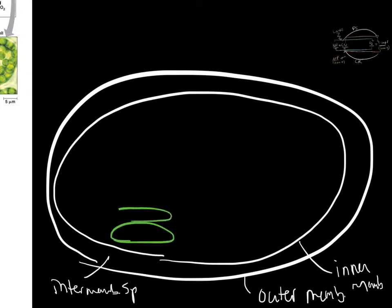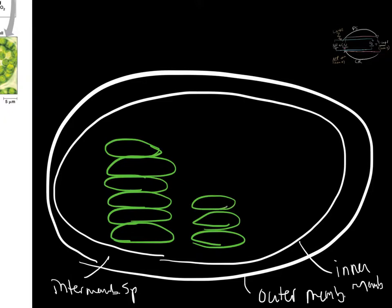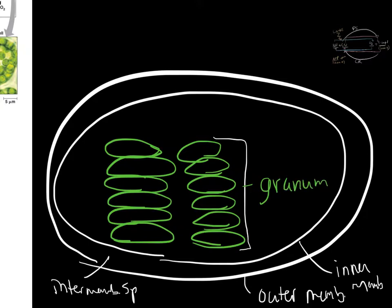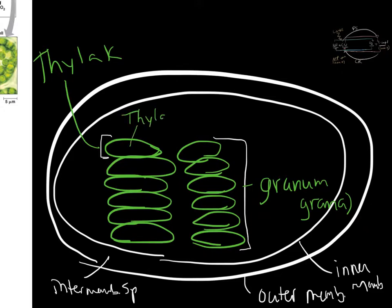Inside the chloroplast, I'm drawing these discs stacked like poker chips in green because they're the part that makes it look green. They contain pigments in their membranes called chlorophyll, as well as carotenoids. One whole stack is called a granum, plural grana. Each little disc is called a thylakoid, meaning sac in Greek. The inside is called the thylakoid space.